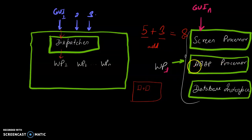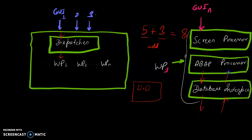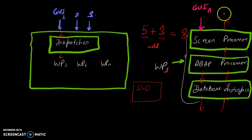After the ABAP processor executes the logic, it sends the result to the data interface, then to the database, then back through the data interface, within the work process, through the screen processor, then to the GUI — and tells you that your result is, for example, 8.